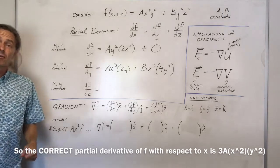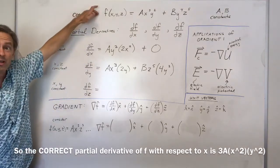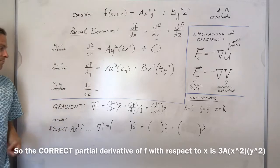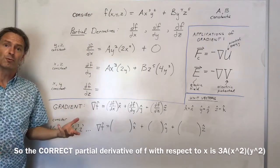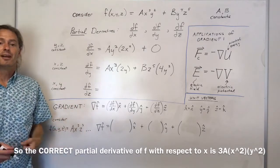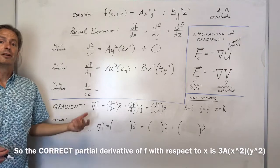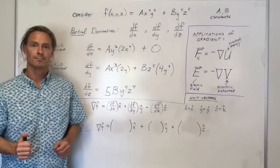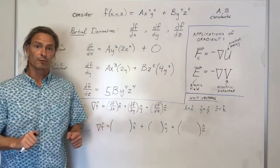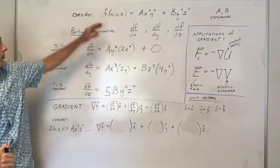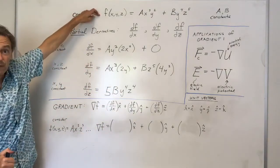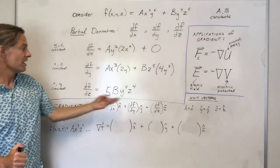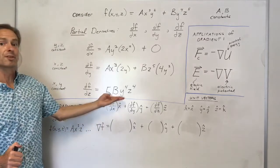I'm going to leave it to you to take the partial derivative of this function f with respect to z. Pause the video, take a moment to work it out, then restart and I'll show you the answer. If we take the partial derivative of f with respect to z and make it look nice, this is the result.